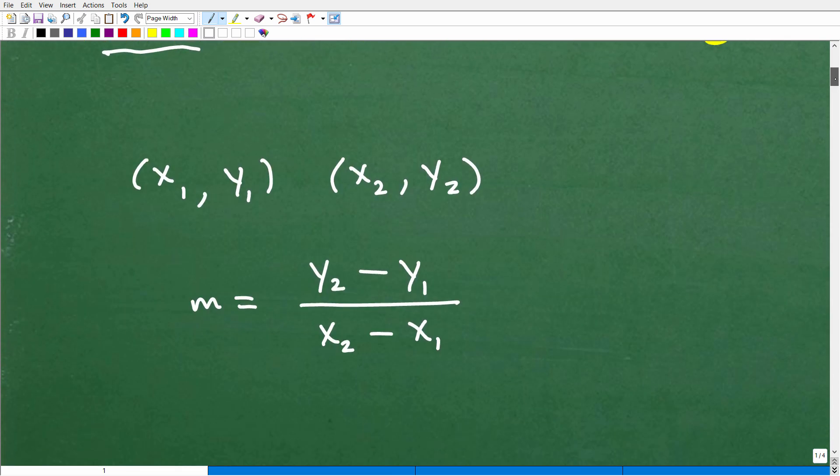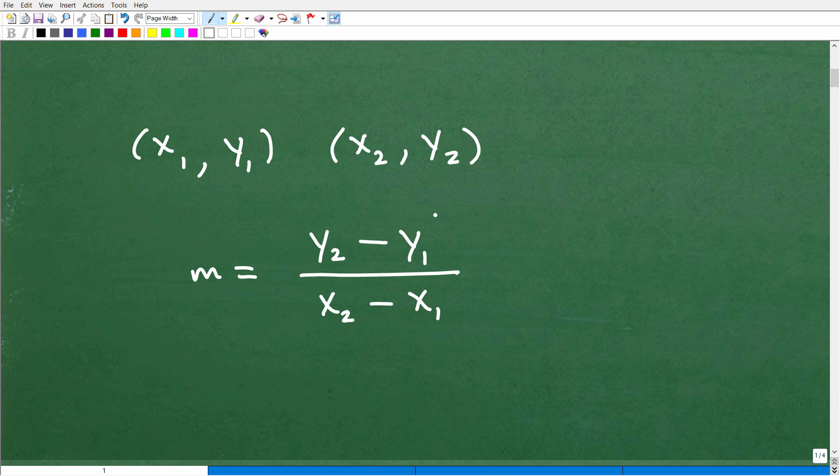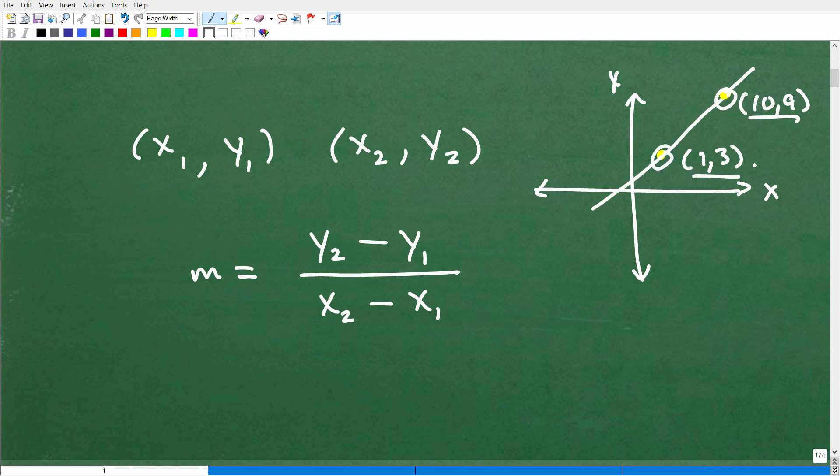So to calculate the slope, we need to understand the slope formula. And here it is right here. So in algebra, here's a little XY plane right here. And let's say I have a point right there and another point right there. Maybe this is the coordinate 10, 9, and maybe this is the coordinate 1, 3. And what I want to do is I want to find the slope of a line that passes through these two points. So here's a point, here's a point. I want to find the slope M.